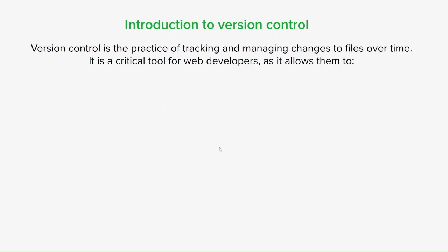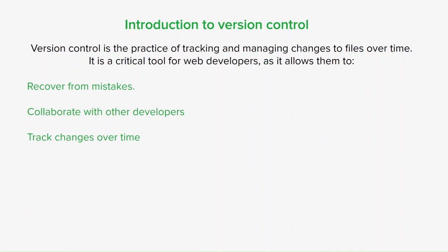Version control is the practice of tracking and managing changes to files over time. It's really critical for web developers and allows them to recover from mistakes by reverting to a previous version of the code. Version control also makes it easy for multiple developers to work on the same project simultaneously without stepping on each other's toes. It also provides a complete history of all changes made over time, which is really helpful for debugging and understanding how the project has evolved.